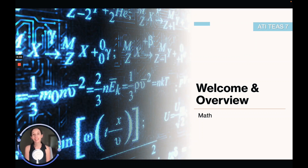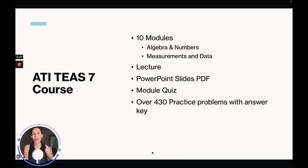Hello and welcome to the ATI TEAS 7 math course. In this course we're going to go over everything you need to know for the ATI TEAS 7 math portion of the exam. I was able to get a hundred on this portion and you guys can do it too if you understand all the concepts we cover. This course consists of ten modules covering algebra and numbers and measurements and data. You're going to get a lecture for each module, PowerPoint slides in PDF format, a module quiz, and there are over 430 practice problems with an answer key that shows you how to solve them.